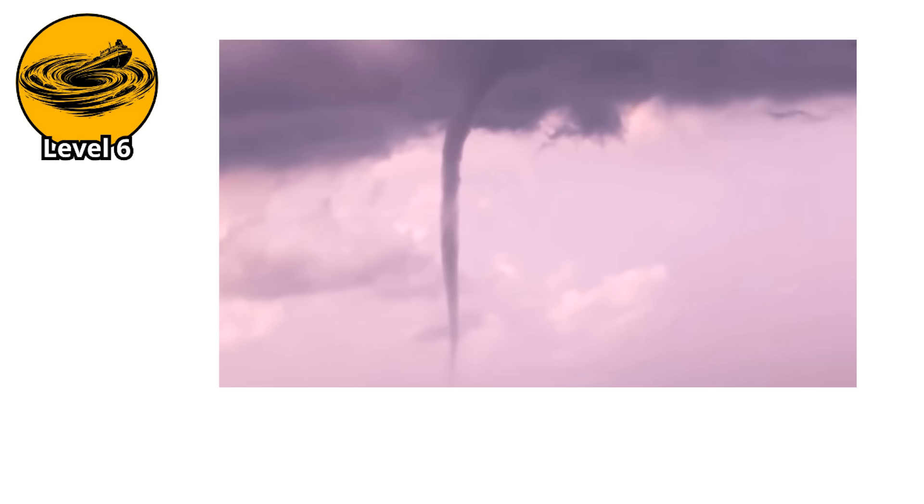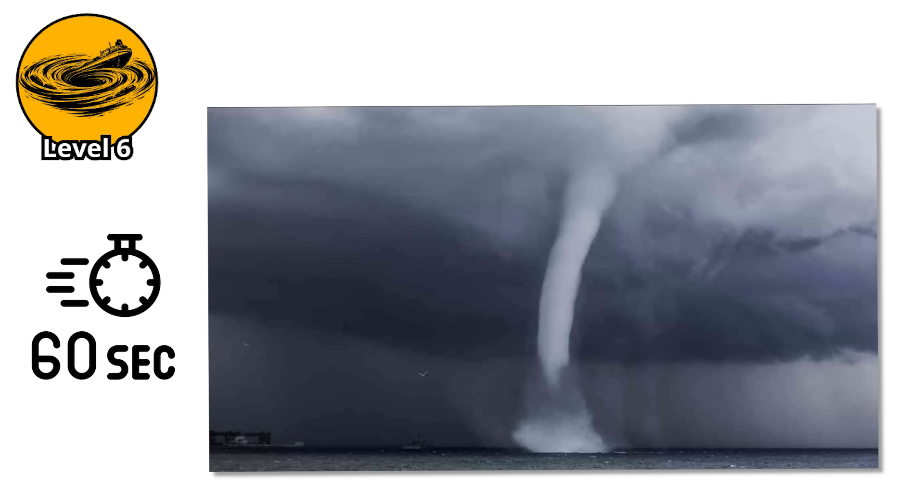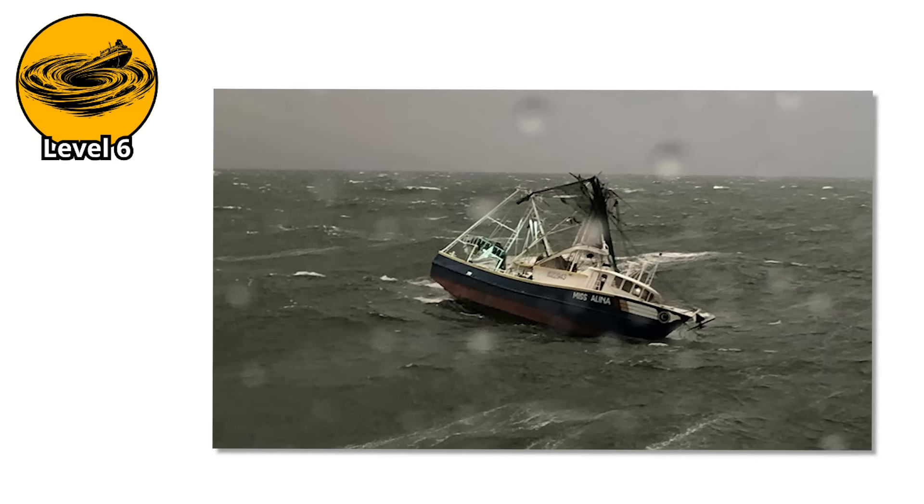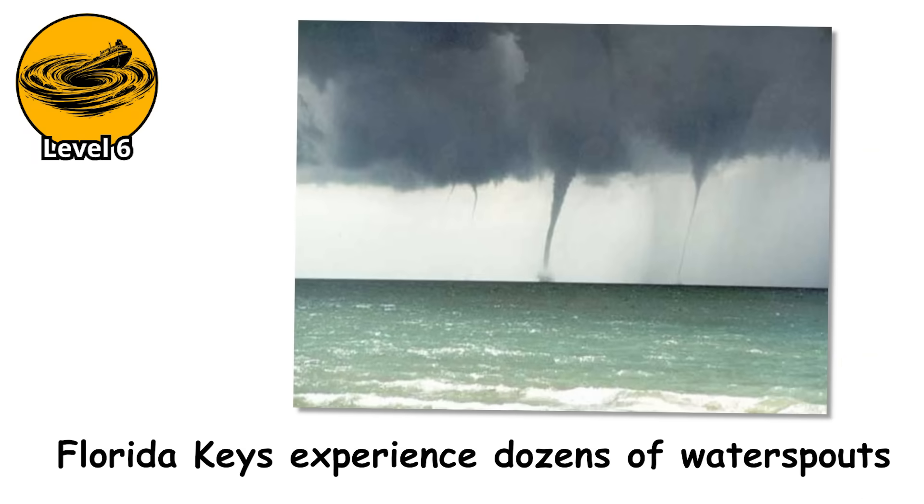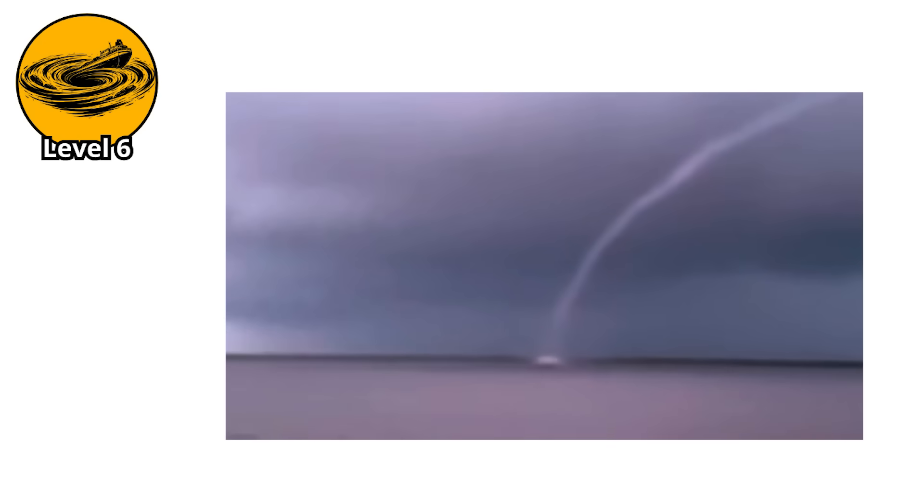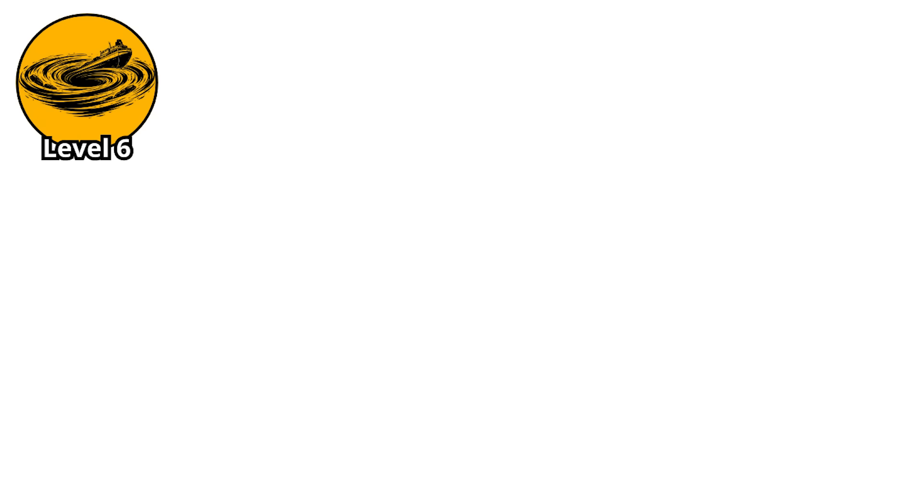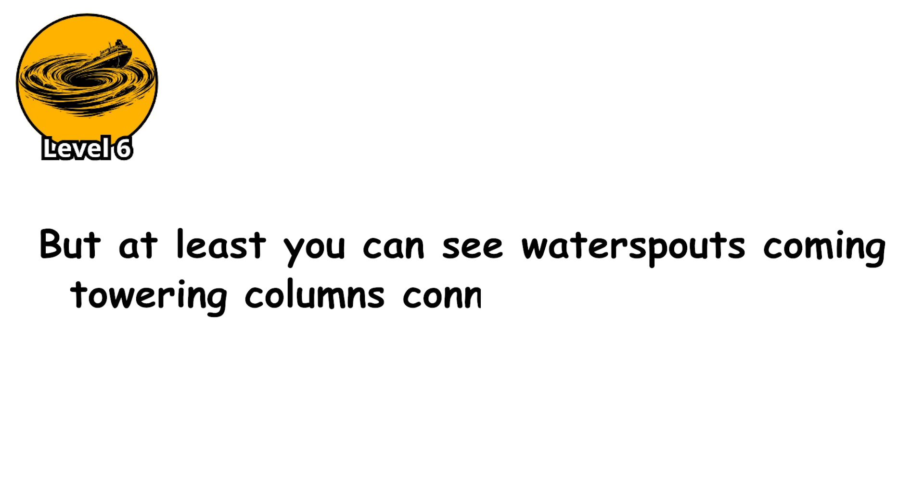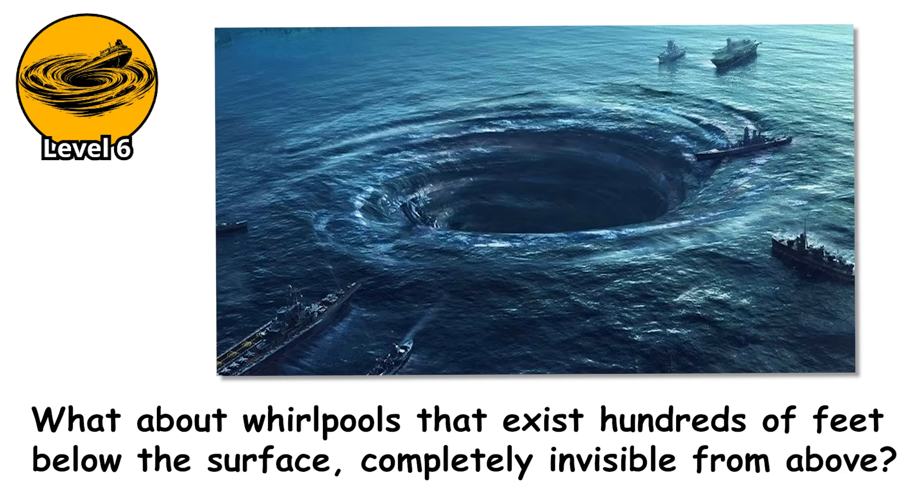But the real killer is what happens to the water underneath. The rotating wind creates a powerful updraft, literally sucking water from the surface. This creates a localized low-pressure zone that can drop several inches in seconds. Boats near the waterspout experience sudden, violent changes in water level and pressure. The surface becomes chaotic, with waves radiating outward from the vortex in all directions. The Florida Keys experience dozens of waterspouts every year. The Mediterranean sees them regularly. Most are fair weather types that dissipate before causing harm. But every few years, a tornadic waterspout catches a boat off guard and people die. But at least you can see waterspouts coming, towering columns connecting water to sky. What about whirlpools that exist hundreds of feet below the surface, completely invisible from above? Level 7!